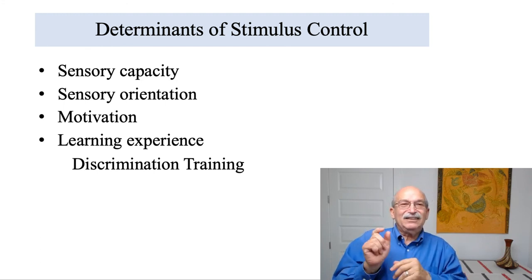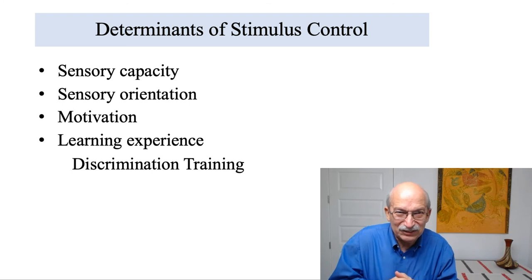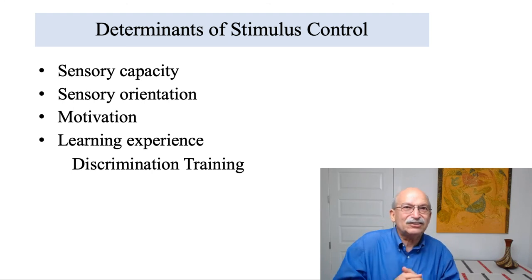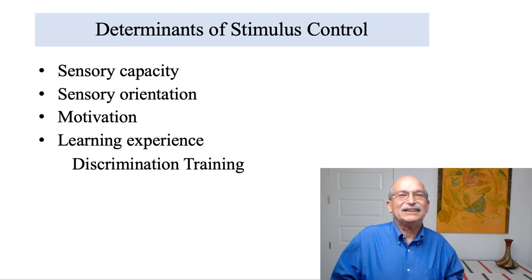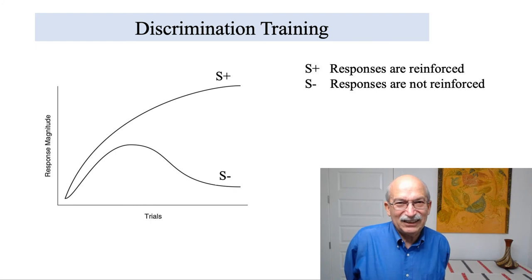But by far and away, the hugely important factor that influences the degree of stimulus control is learning — and not just any form of learning, but in particular, discrimination training. So let's talk about what discrimination training is, as illustrated in the next slide.